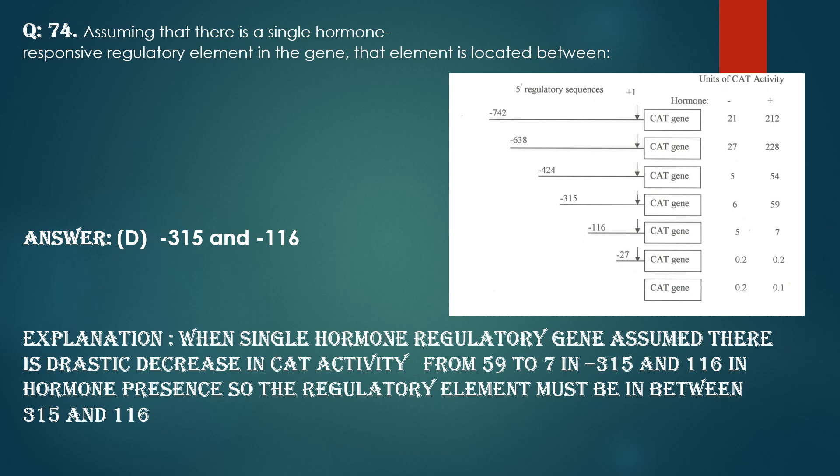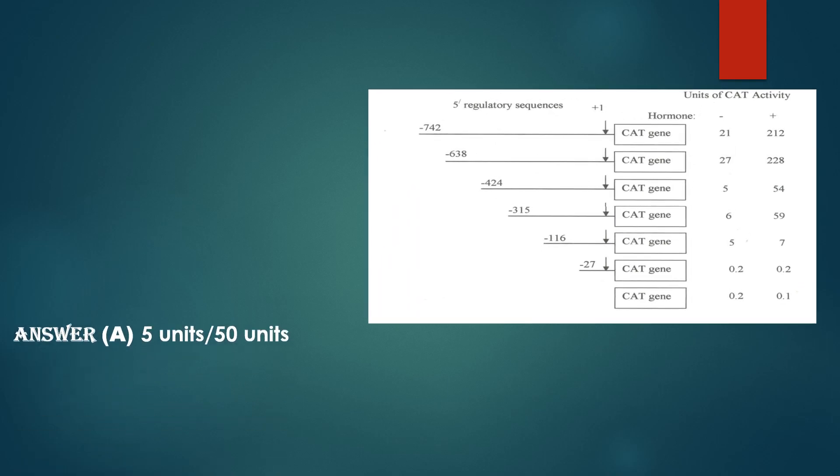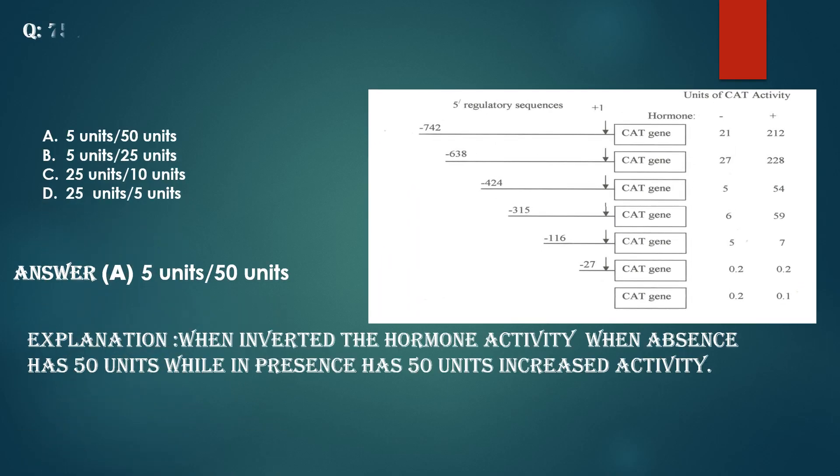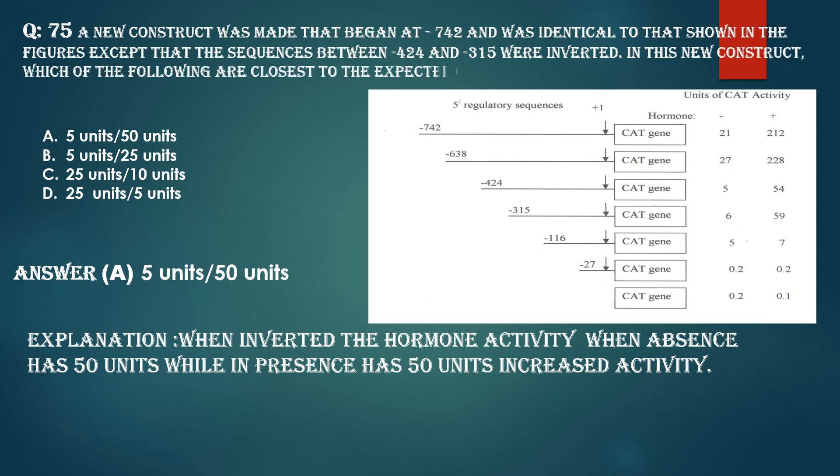The regulatory element must be present between these transcripts. Next question. Question number 75: A new construct was made that began at minus 742 and was identical to that shown in the figure, except that the sequences between 424 and 315 were inverted. The new construct, which of the following is closest to the expected CAT activity in absence and presence respectively of hormone.